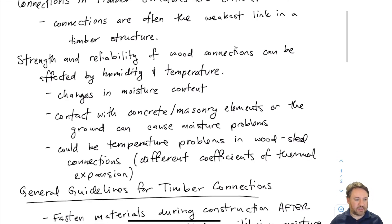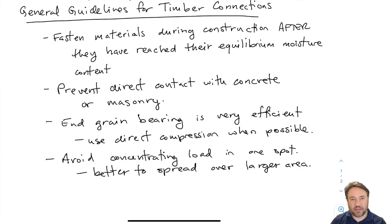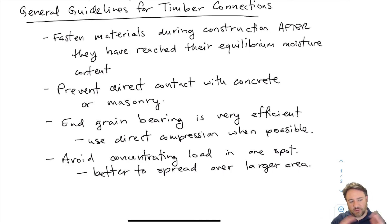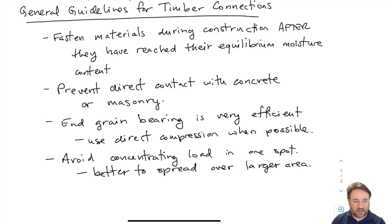I'll cover some general guidelines — things we should consider and avoid when making timber connections. Moisture problems can be at least partially mitigated by ensuring that when we form the connections, the timber has more or less reached a reasonable equilibrium moisture content similar to what it will be in service. If we bring material to site, store it outside, and it gets wet from rain, then when we install the connections in the wet condition and the material later dries, it will experience significant shrinkage and we could develop cracks.